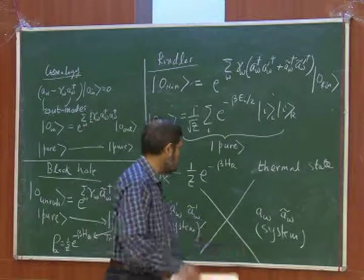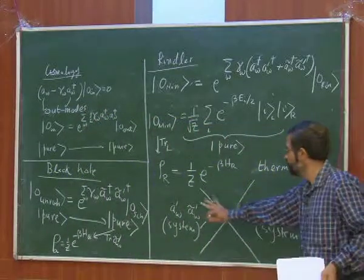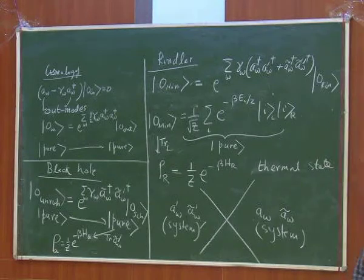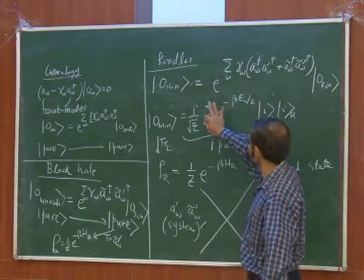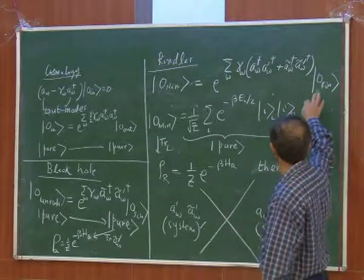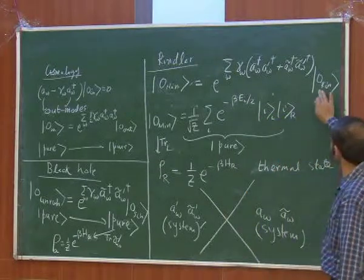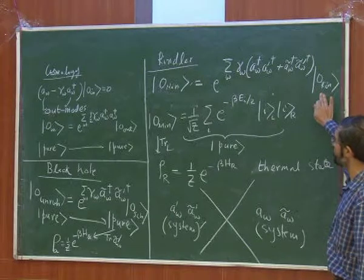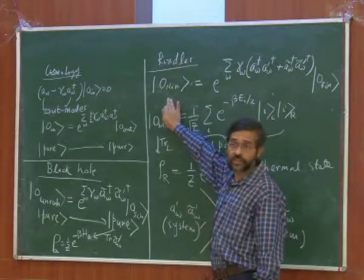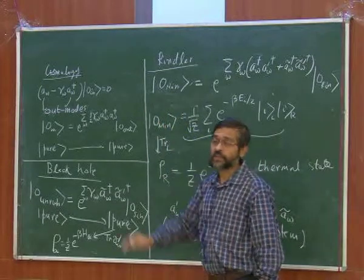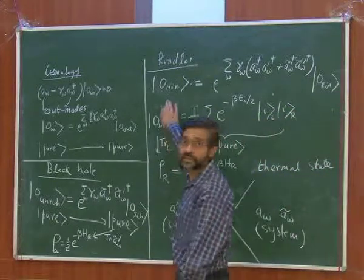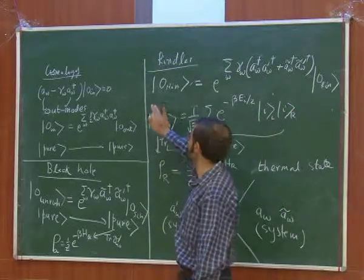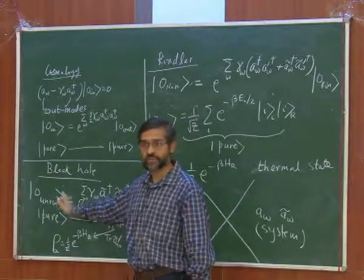We will find that this structure arises also for the eternal black hole, and pretty much the same physics goes through with the following replacements: the Rindler vacuum will be replaced by the Schwarzschild vacuum. For the collapsing black hole, the situation will be a little different — instead of the Hartle-Hawking vacuum, it will be the Unruh vacuum. It will be an entangled state leading to a density matrix of this kind, but it will also have a flux.